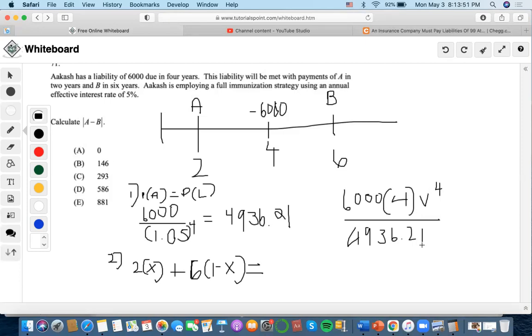So we're going to do 24,000 times 1.05 to the negative 4, and we're going to get 19744.8594 divided by 4936.21, and it's going to be 4. Now we're going to solve for X.